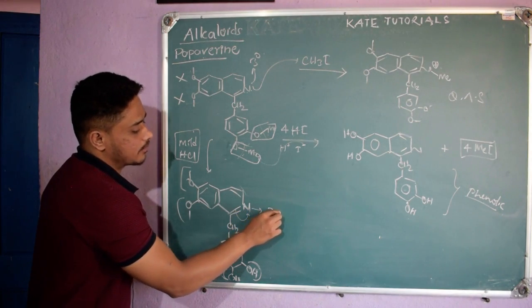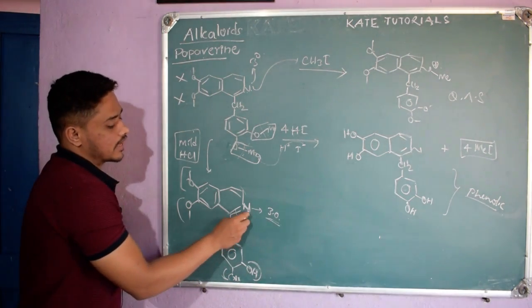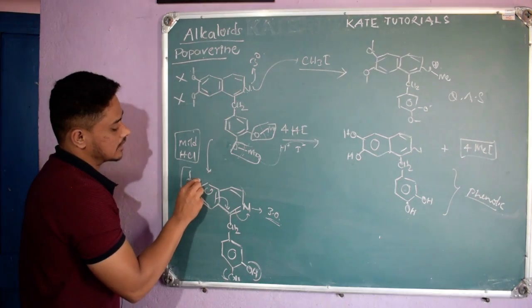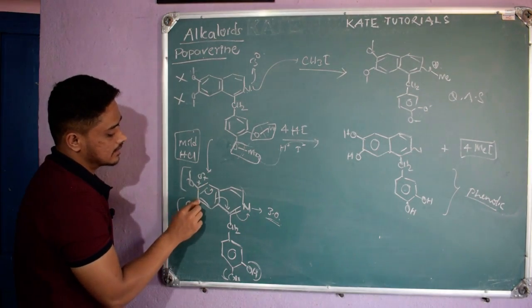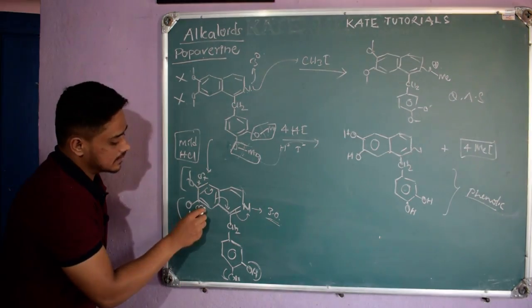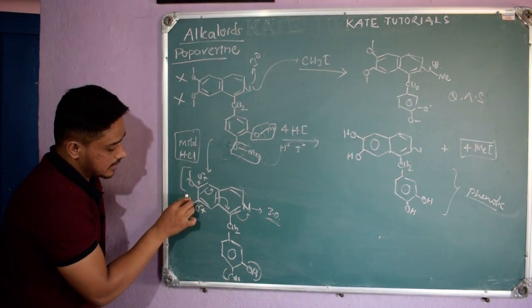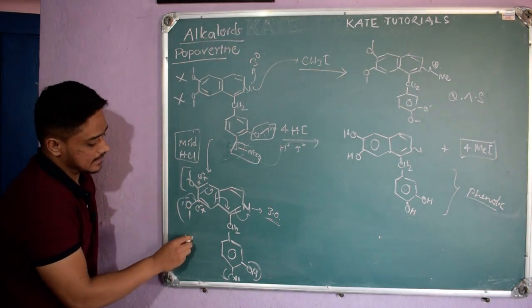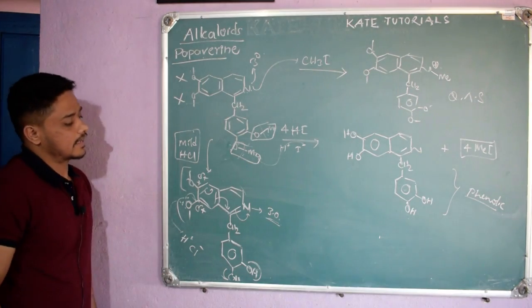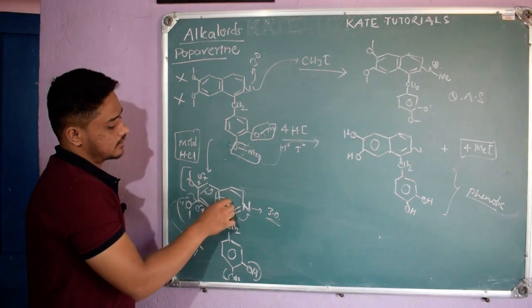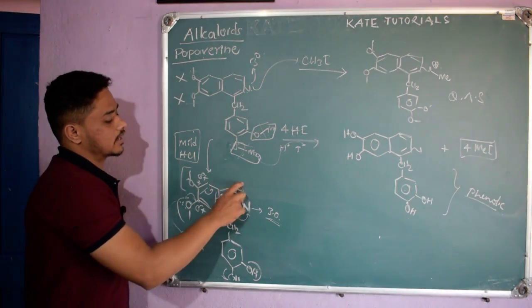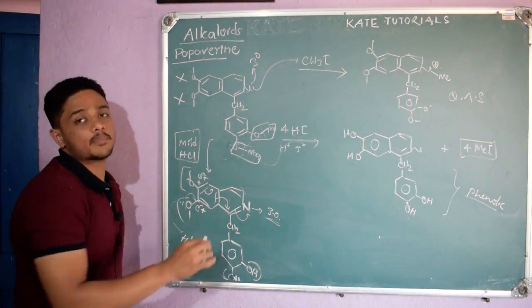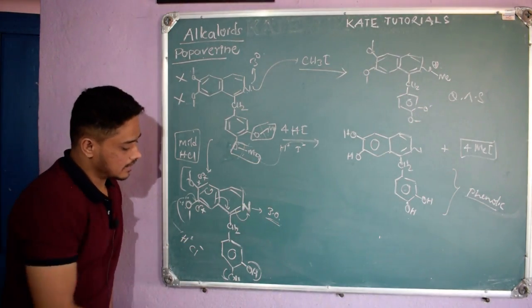The reason is that nitrogen in the isoquinoline ring is electronegative (electronegativity 3.0). It withdraws electron density through the pi system, causing partial positive charges on the adjacent carbons. Because of this, the lone pairs on the oxygens attached to that ring are involved in resonance and less available to donate to H⁺. So those oxygens don't react with mild HCl. The isoquinoline ring is more electron-deficient.